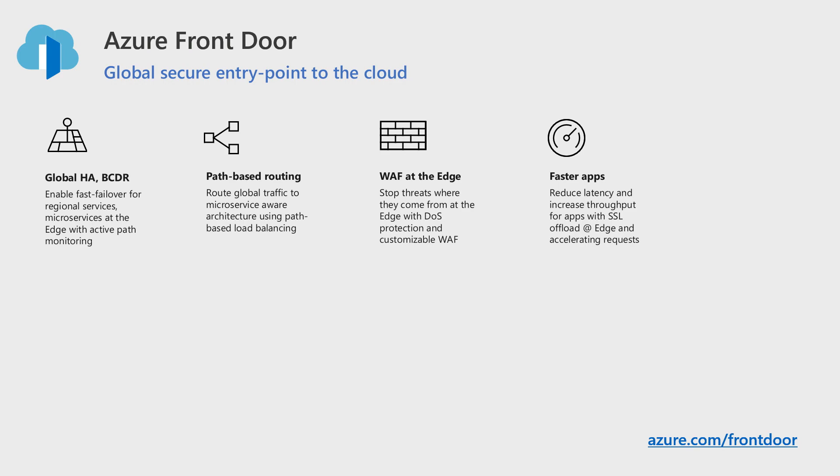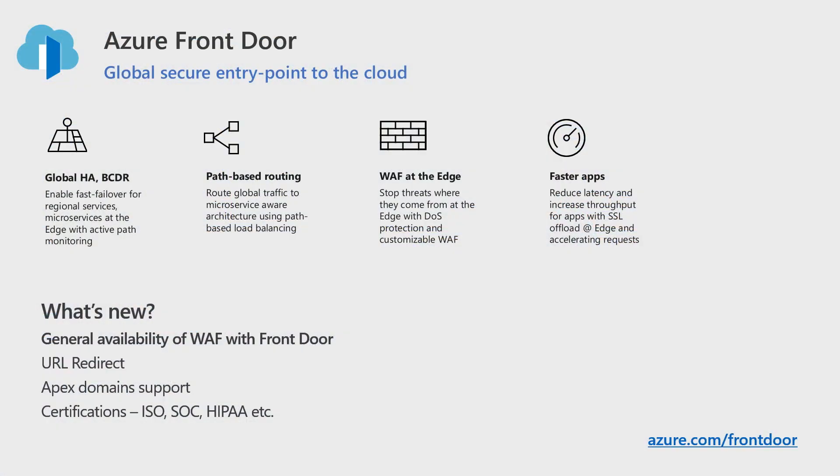We are investing very heavily in this space because we see the constant requirement from customers asking how they can improve application security. Can we protect against SQL injection, cross-site scripting, and multiple other things? And because Front Door is a content site acceleration platform and at the heart of it a CDN as well, we literally accelerate both your dynamic and static content. New capabilities include GA for WAF, enabled URL redirect — you can redirect HTTP to HTTPS, redirect from one domain to another, or redirect on paths.